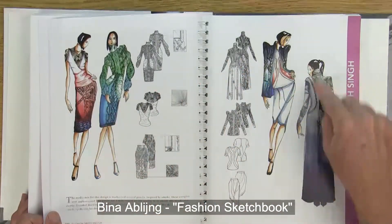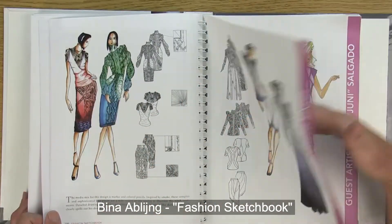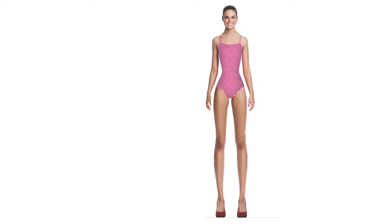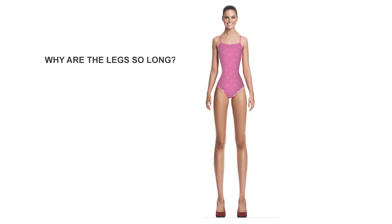Now that you understand why the 10-heads figure is so narrow in the waist, shoulders, and neck — so you can make a jacket look like it is truly a women's size 6 — your next question should be: why are the legs so long? The reason is to accommodate all the different hem lengths on your skirts and dresses.